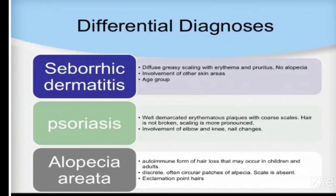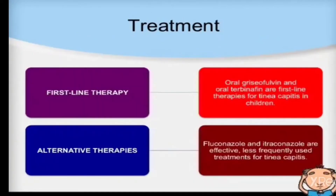Alopecia areata is an autoimmune form of hair loss that may occur in children and adults. It presents with discrete, often circular patches of alopecia. Scale is absent and exclamation point hairs are present.